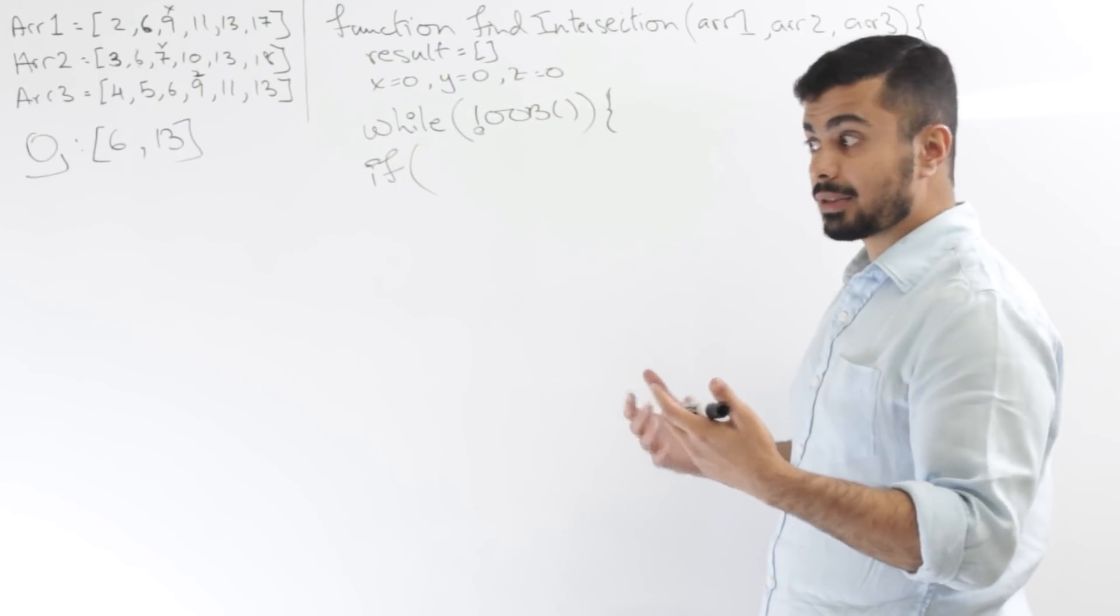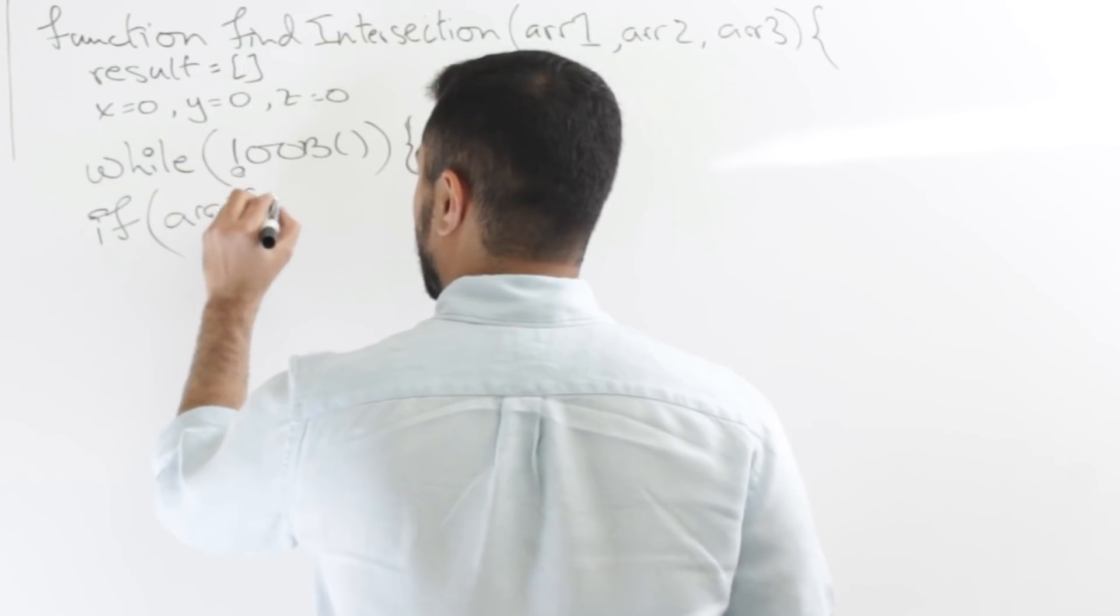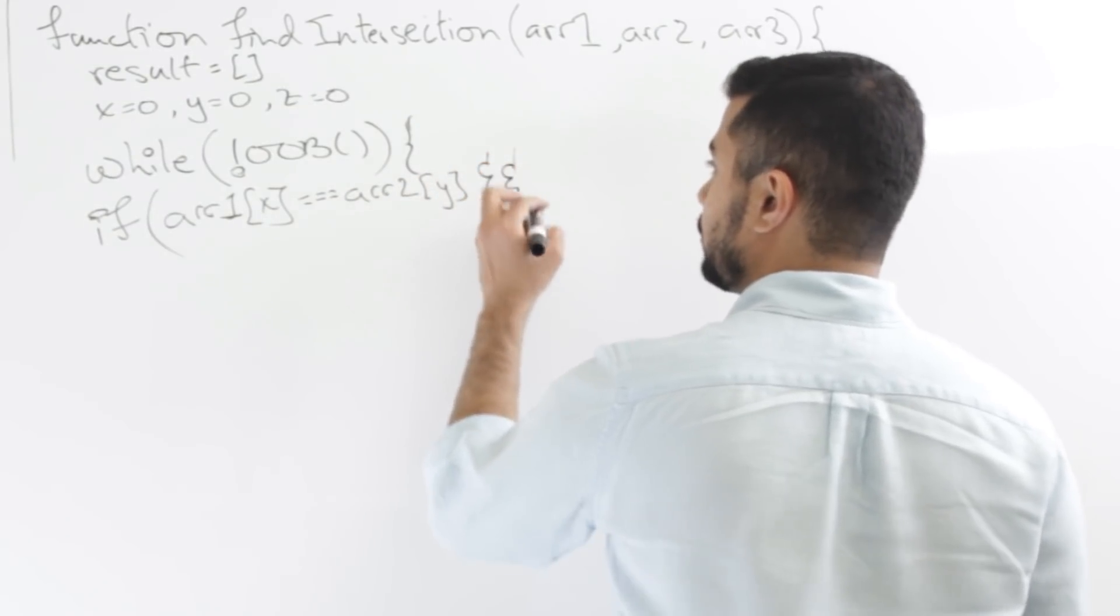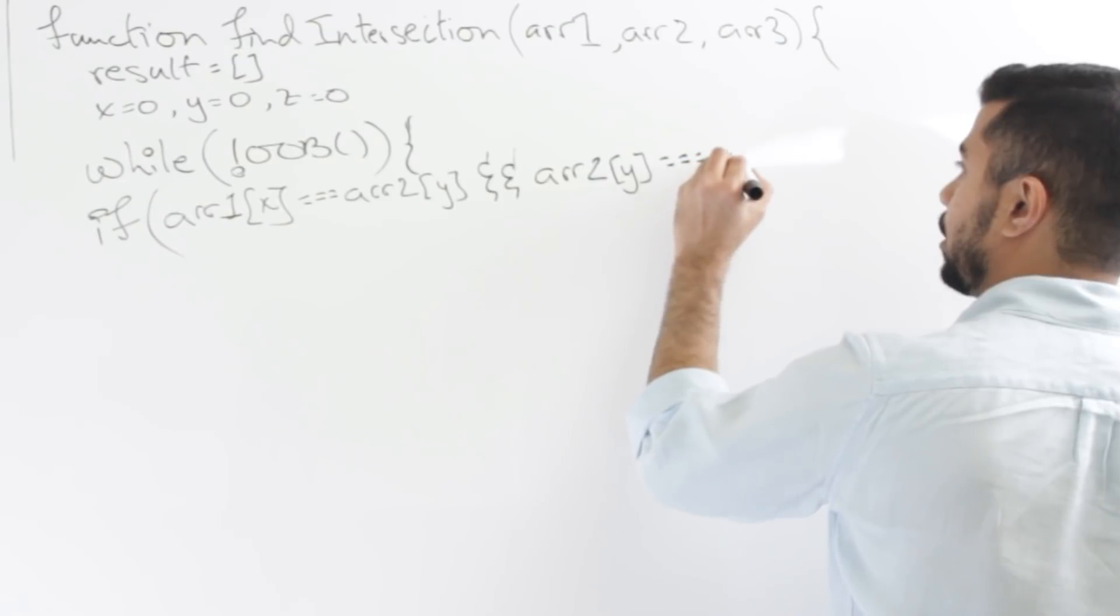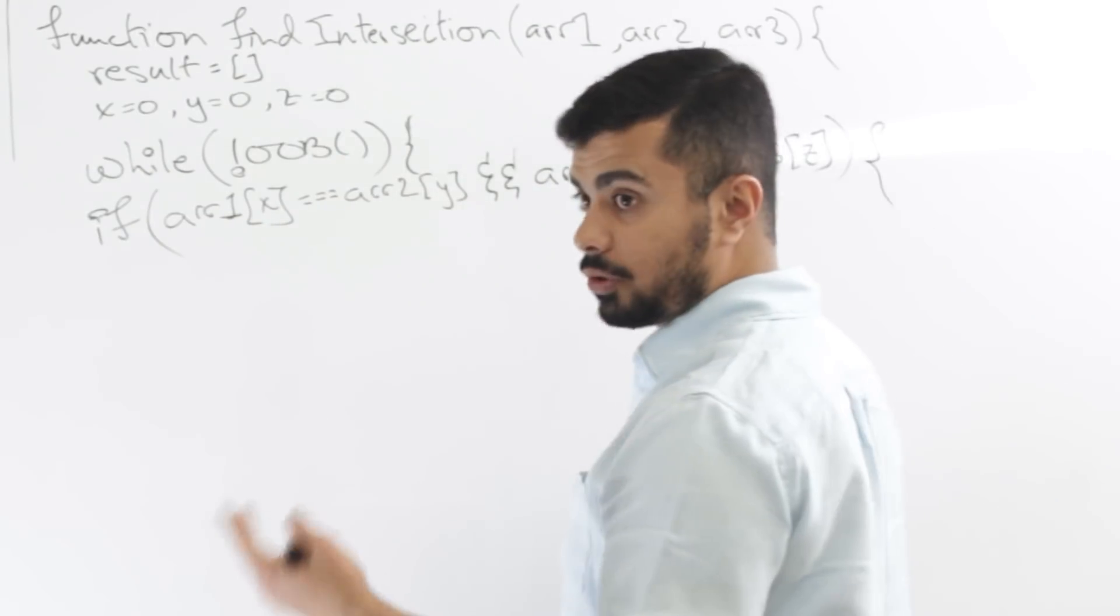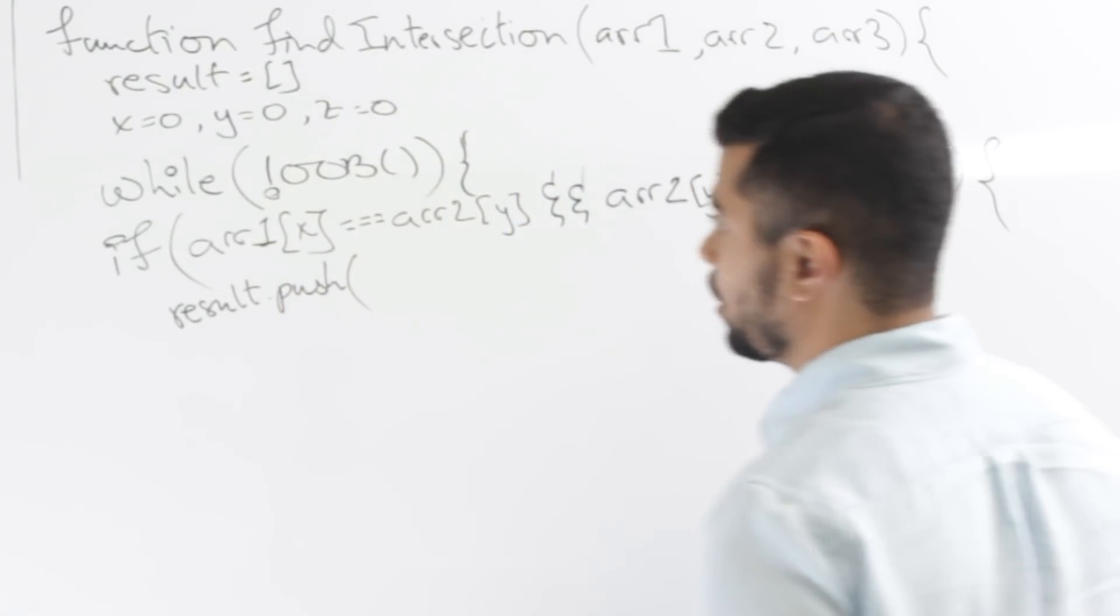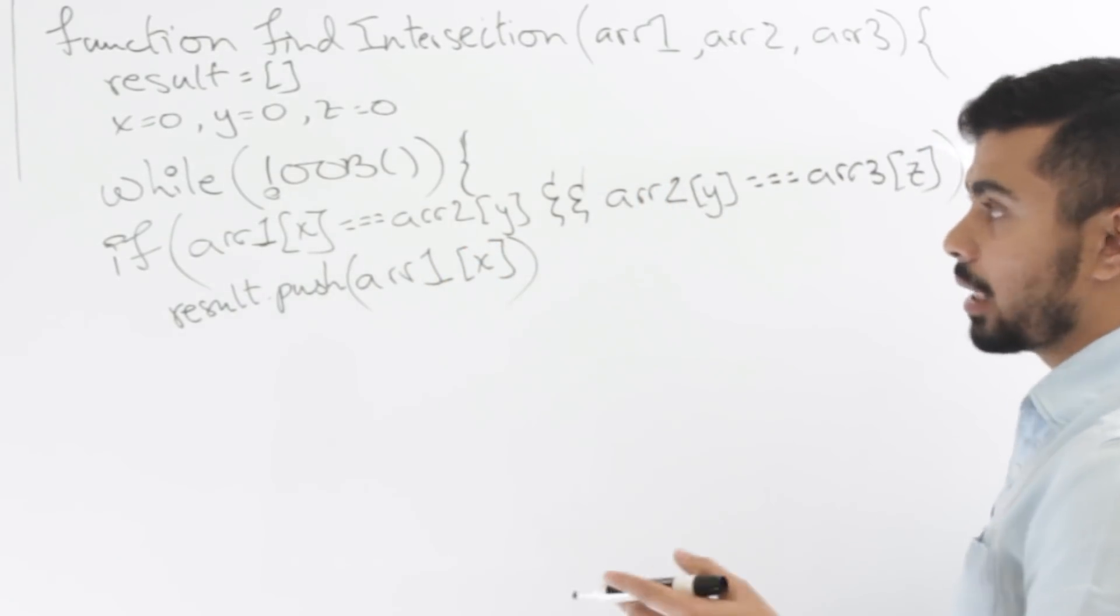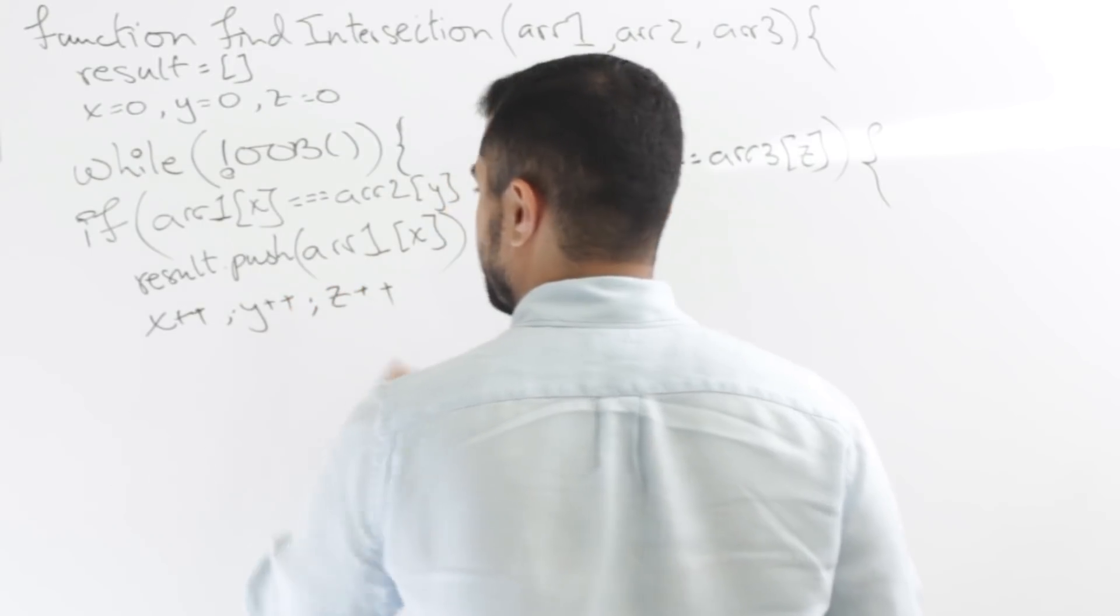So the first one is basically if the values at all three X, Y, and Z are the same. If that's the case, then I push the values to my results. So I'll say if array 1[X] equals array 2[Y] and array 2[Y] equals array 3[Z], so if this is the case, then I do two things. One is I push the result, so result.push any of the values, array 1[X]. The next thing I do is I increment all three of the indices, so X++, Y++, and Z++.